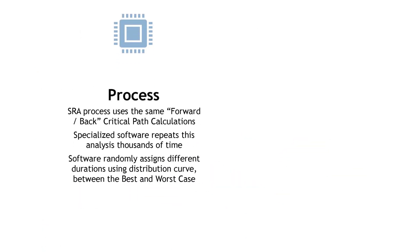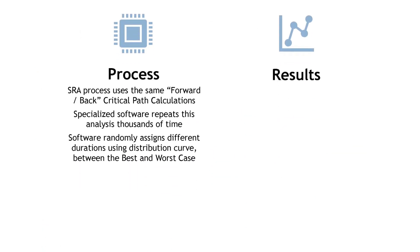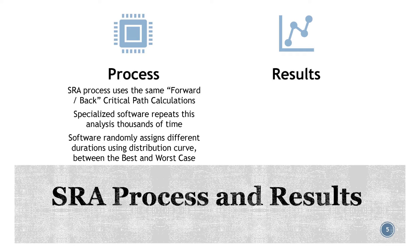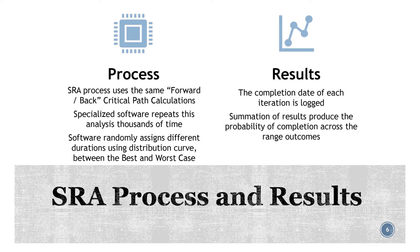The basic process for conducting an SRA is to first have a healthy integrated master schedule with a meaningful critical path. The SRA process uses the same logic network for its calculations, except instead of calculating a project duration based on a single set of dates, it repeats the forward and backward calculations hundreds or thousands of times. For each of these iterations, the software randomly assigns different activity durations between the best and worst cases based on the associated distribution curve. As a result, a completion date associated with each iteration is logged, and a summation of these results reports on the probability of achieving each date within the range of the total outcomes.